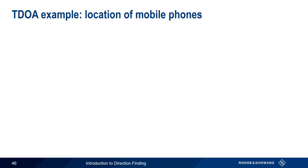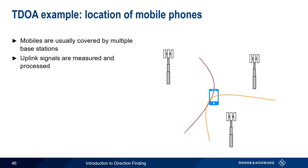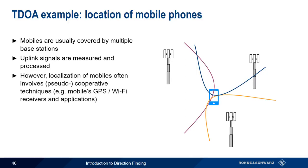One commonly mentioned application of TDOA is the location of mobile or cell phones. In most cases, mobiles are within range of multiple base stations simultaneously. Uplink signals from the mobile are received and processed by each base station, which then send timestamped data to a master station for processing. Note however that localization of mobiles increasingly involves cooperative, or at least pseudo-cooperative, techniques — in other words, the mobile's location is determined by querying the mobile's internal GPS or Wi-Fi receivers using a data connection. If you're using an application like FindMyiPhone, this isn't based on TDOA direction finding.